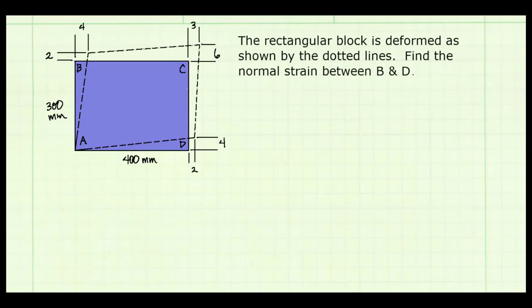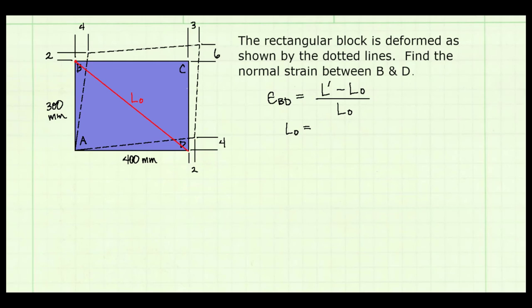Here's a normal strain problem. A rectangular block is deformed as shown by the dotted lines; find the normal strain between points B and D. The deformations are exaggerated for clarity. The equation is: normal strain = (new length L-prime minus original length L₀) divided by L₀. Using the Pythagorean theorem, the original length L₀ works out to 500 mm.